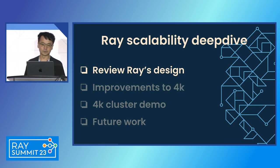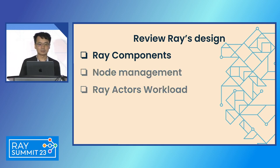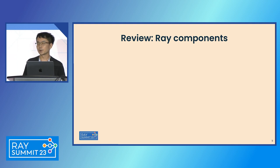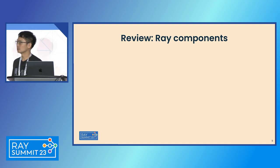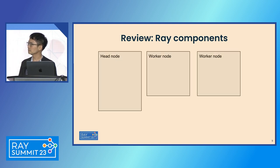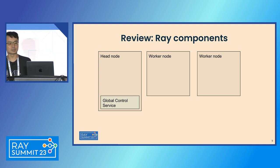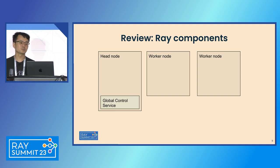Let's do the review first. This part is to refresh our knowledge about Ray. Firstly, Ray components. Suppose you have a Ray cluster with three nodes — there are two types: worker node and head node. On the head node, there's GCS, also known as Global Control Service. This is a centralized controller inside Ray, doing all the coordination work between nodes and between Raylets on each of the nodes.